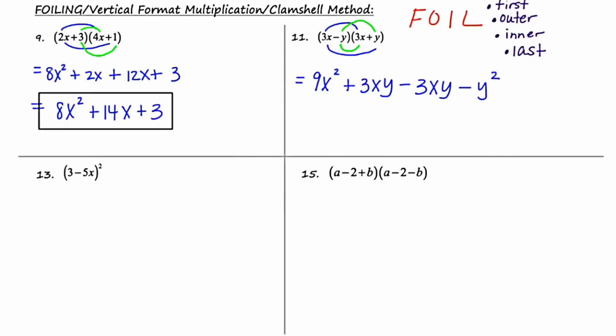I notice that the two middle terms — plus 3xy and minus 3xy — are like terms, but they're also opposites of each other, which means they're going to cancel out. So in the end, what we're left with is 9x squared minus y squared.